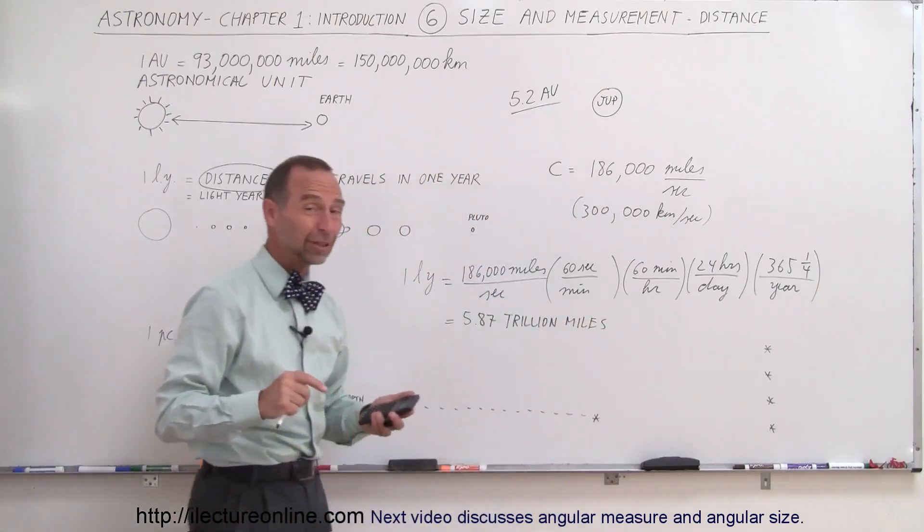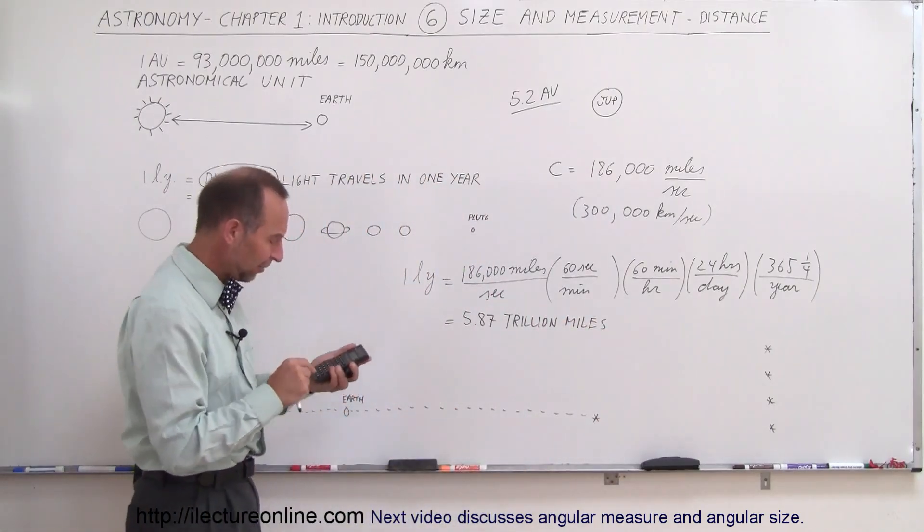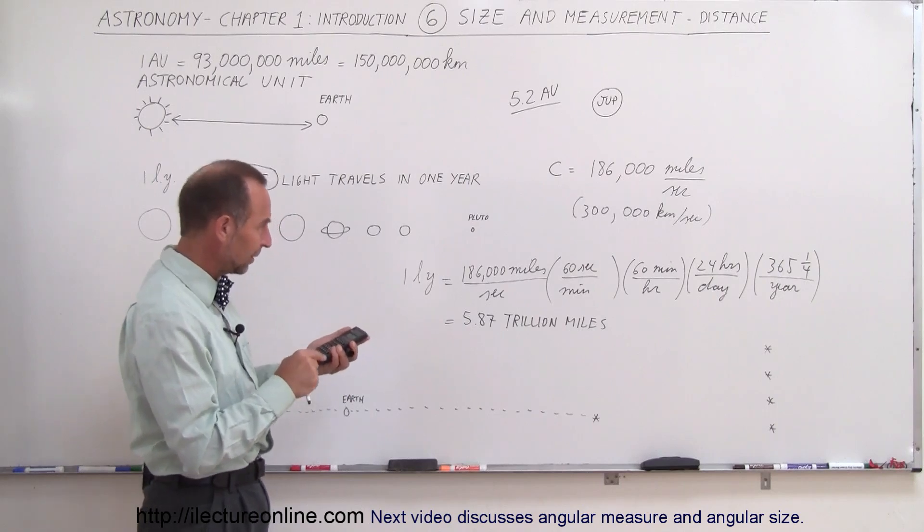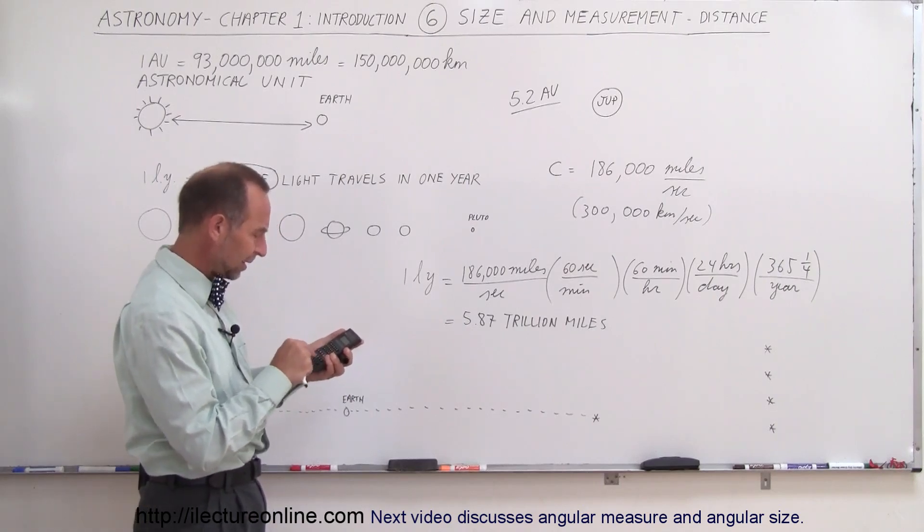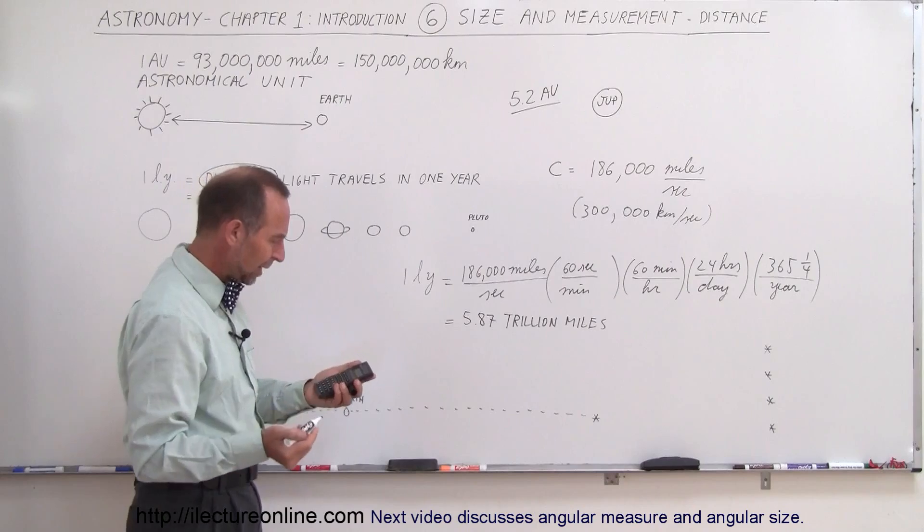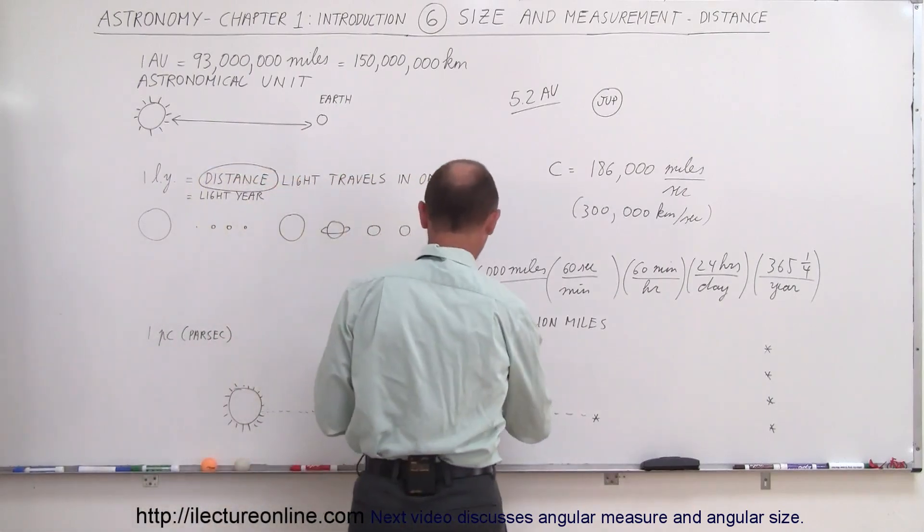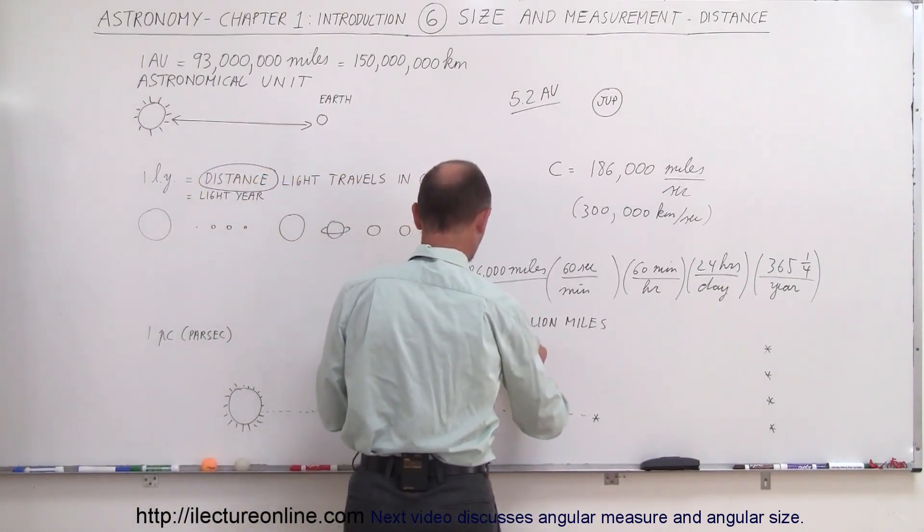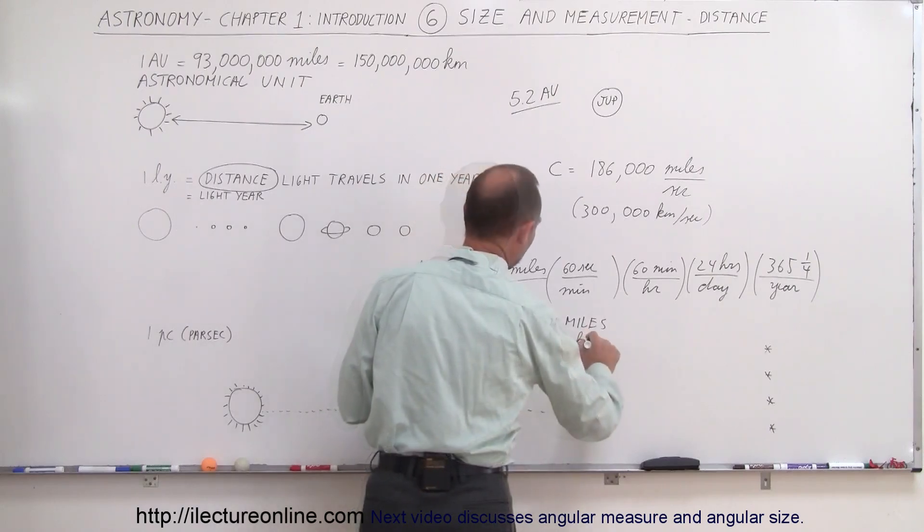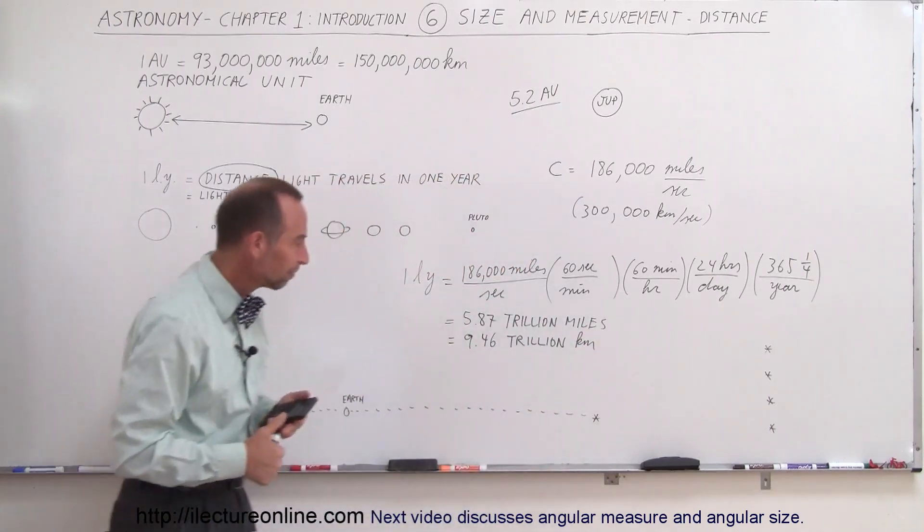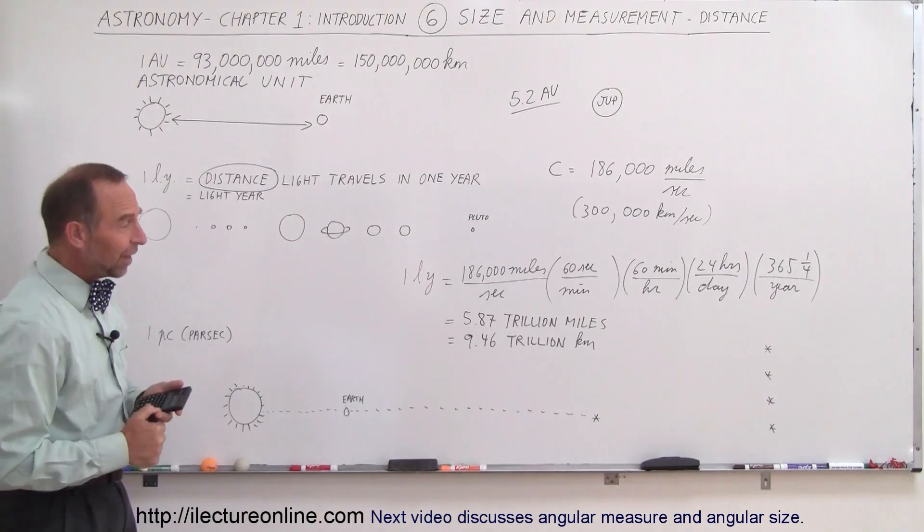Now, if you do that with kilometers instead of miles, what do we get? So we get, well, divide by 186 times 300, we get 9.46. So this is 9.46 trillion kilometers. Wow, that's quite a distance.